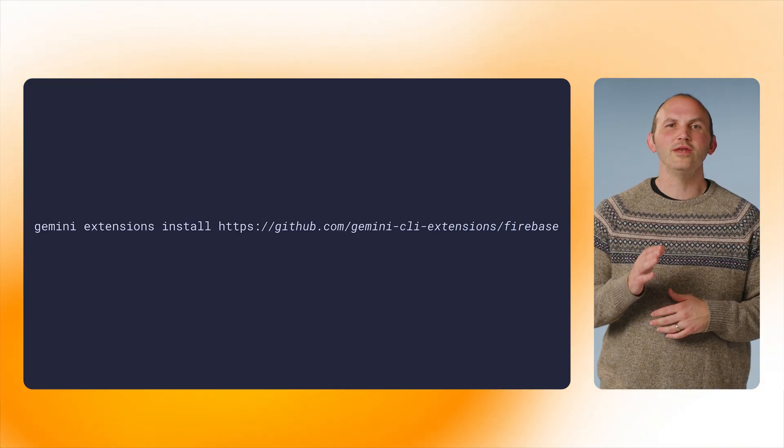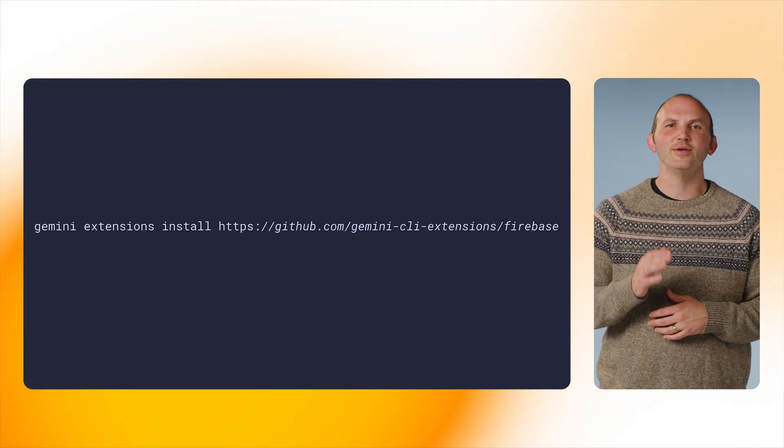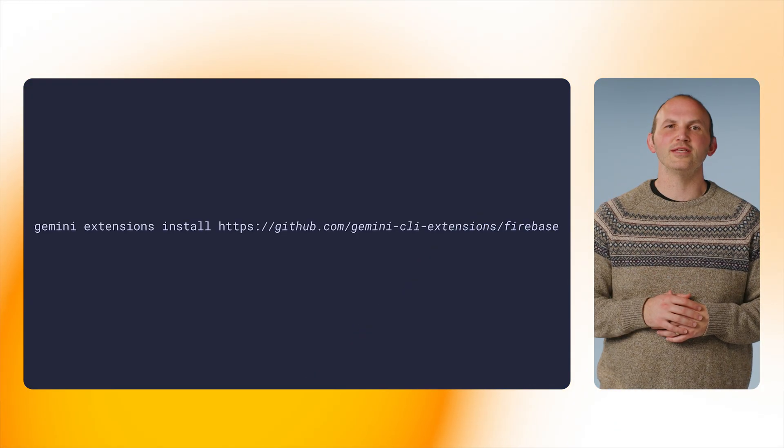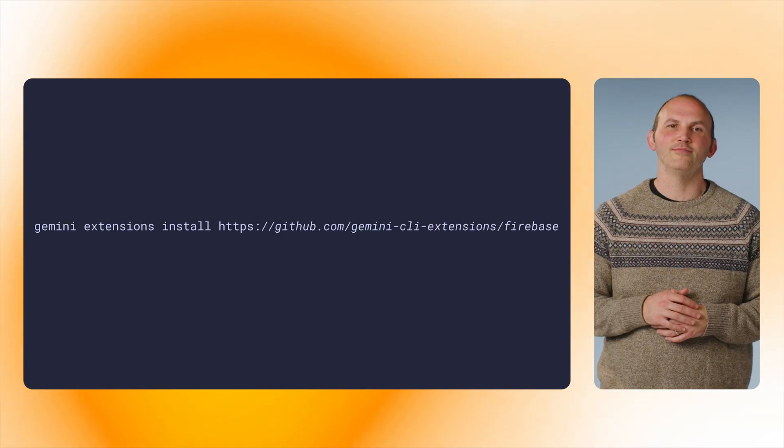To start, we need to install the Firebase extension for Gemini CLI by using this command. The Gemini CLI will go to the GitHub repository and install the Firebase extension for us. The Firebase extension is primarily based on the existing Firebase MCP server, so we will also need to have Node.js installed in order to use it.